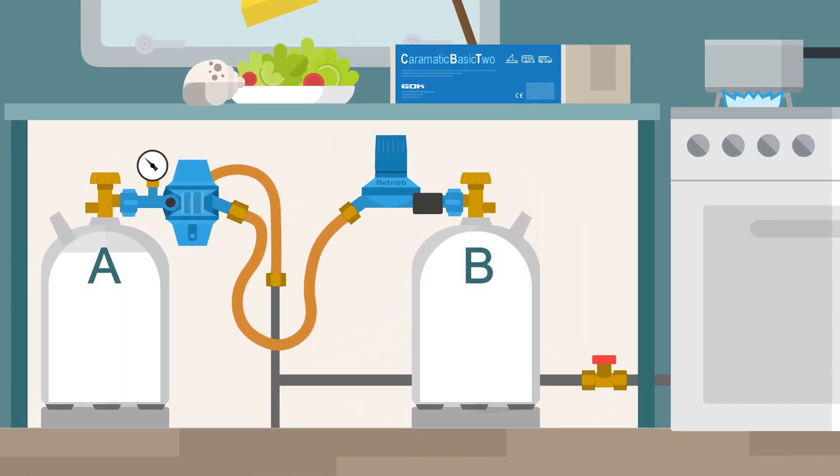Firstly, LPG is drawn from cylinder A on which the central regulator is installed. If cylinder A is empty, the system switches automatically to cylinder B.